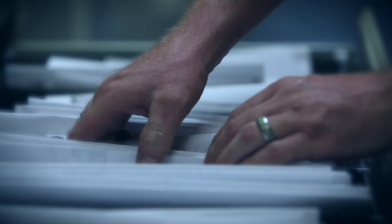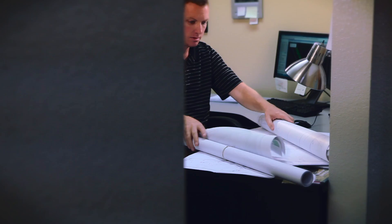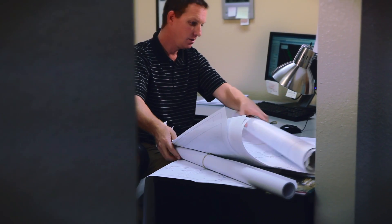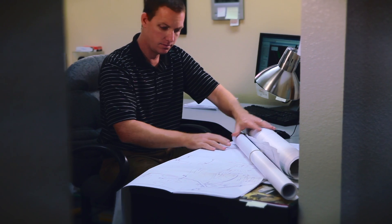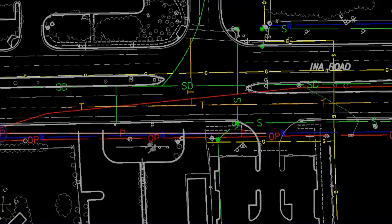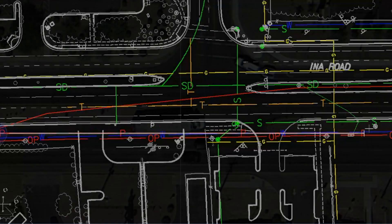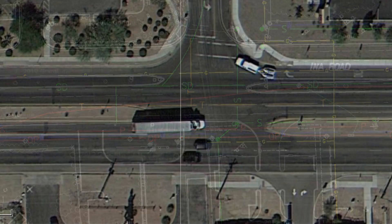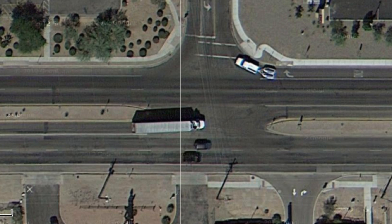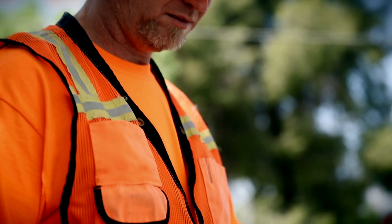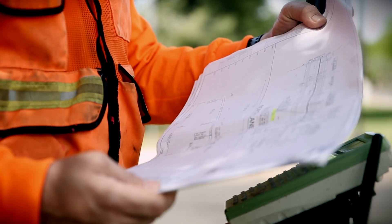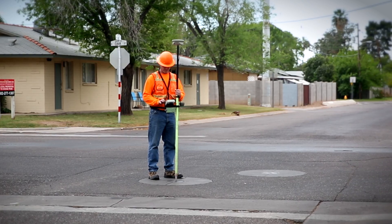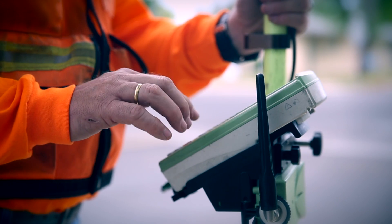Quality levels C and D are used for early project planning. At level D, plans are simply obtained and compiled as a starting point. Quality level C takes us one step further by correlating the visible utility features with existing utility records.